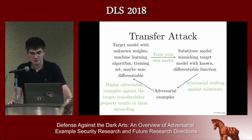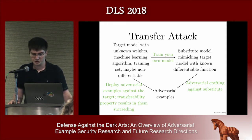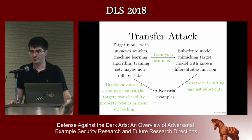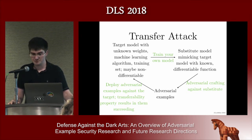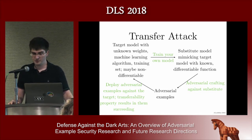This means we can construct an attack using the transfer property. We target a model with unknown weights or an unknown architecture, train our own model to mimic the target, make adversarial examples for our substitute model, then deploy those against the target model. Because of the transfer property, it's very likely we'll fool both.